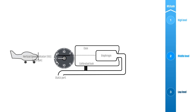For an aircraft flying at the middle level altitude, static pressure from the static port is two units inside the case and two units inside the diaphragm. Both pressure areas are equal, thus cancel each other out. The diaphragm does not move and the VSI displays zero.